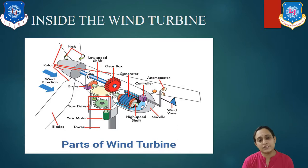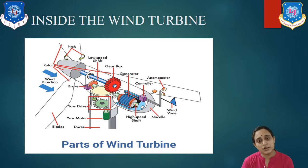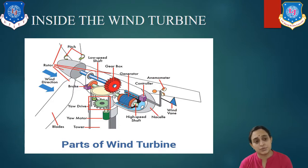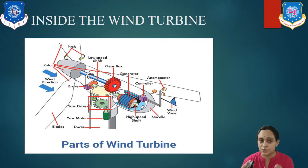Let us understand all the parts. First of all, what is the rotor? The blades of the rotor are bolted onto the main shaft. The rotor will turn and pass the wind's energy to the main shaft.